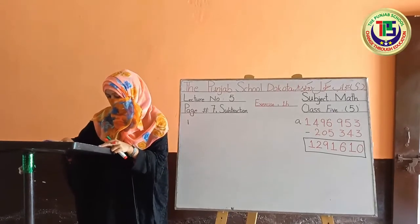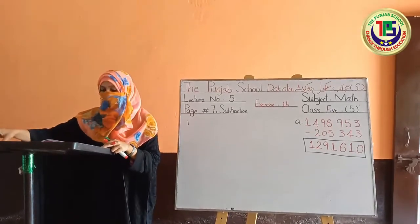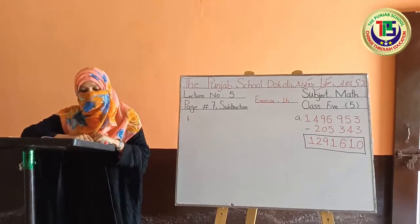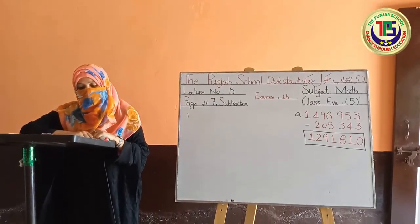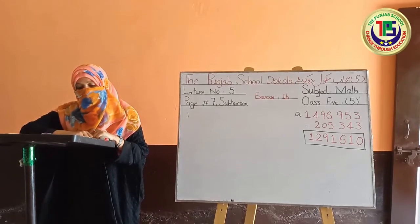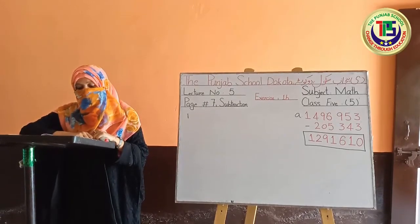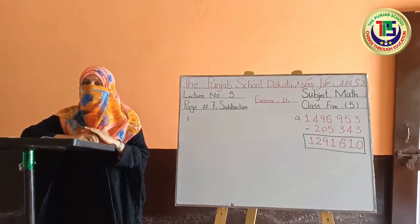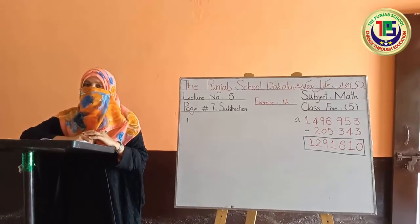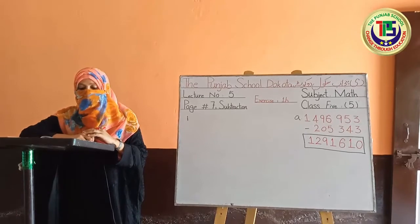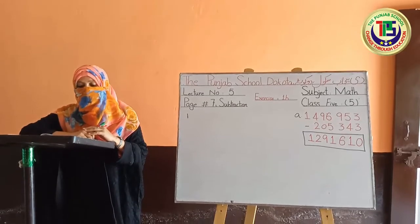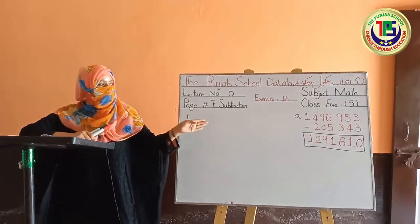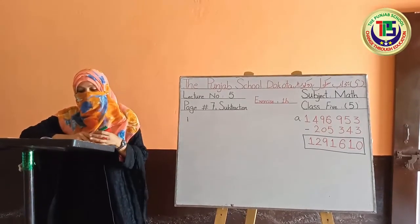Come to the next page — page number 8. Look at the heading: 'Solve these sums using the international system.' Using the international system, we have to sum these numbers — that means to add them. This is our addition. A statement is given to us.